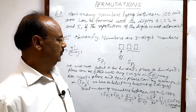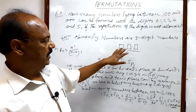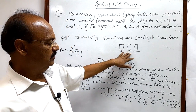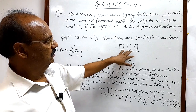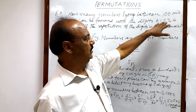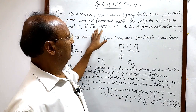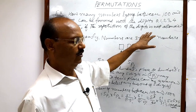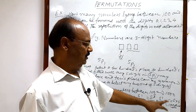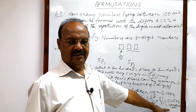So the total number of 3-digit numbers formed with the help of 0, 1, 2, 3, 4, and 5, when repetition is not allowed, is 100. That is the final answer.